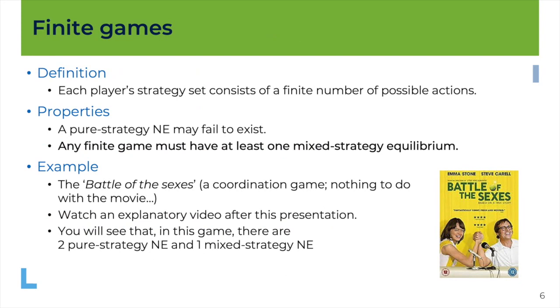First of all, what is a finite game? Well, this is simply a game where the strategy set of each player has a finite number of possible actions. So my example before with going left or going right, there are two possible actions, so it's definitely a finite game. What's interesting is to look at the properties of these games. Well, as I said before, in this type of games a pure strategy Nash equilibrium may fail to exist, but you're sure to find at least one mixed strategy equilibrium.